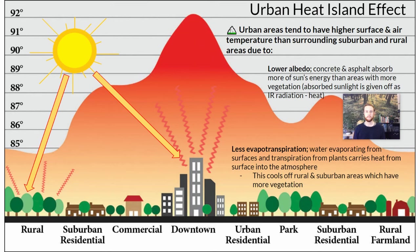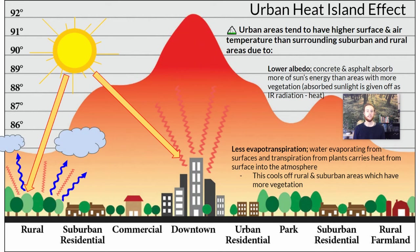Another reason for the urban heat island effect is evapotranspiration. Going back to the water cycle from unit one, evapotranspiration is the combination of evaporation of water from land surfaces and transpiration, which is water leaving the pores of leaves. That combined effect where water is leaving the surface provides a cooling effect. We can represent that with large blue squiggly arrows coming out of the rural area — all those trees are transpiring, taking heat and dispersing it into the atmosphere. In the downtown urban area, there are fewer trees, less transpiration, and less evaporation due to so much runoff, so that evaporative and transpirational cooling is not as prominent.